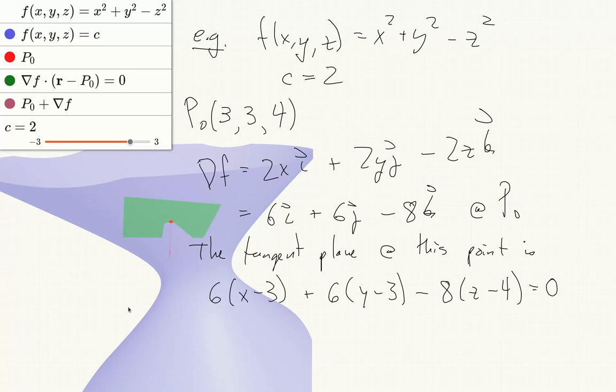Then the normal line at this point is given by (3 plus 6t) i plus (3 plus 6t) j plus (4 minus 8t) k.